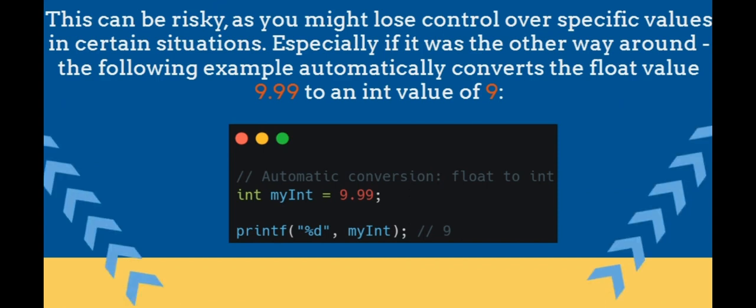This can be risky, as you might lose control over specific values in certain situations. Especially if it was the other way around, the following example automatically converts the float value 9.99 to an int value of 9. What happened to 0.99? We might want that data in our program. So be careful. It is important that you know how the compiler works in these situations to avoid unexpected results.